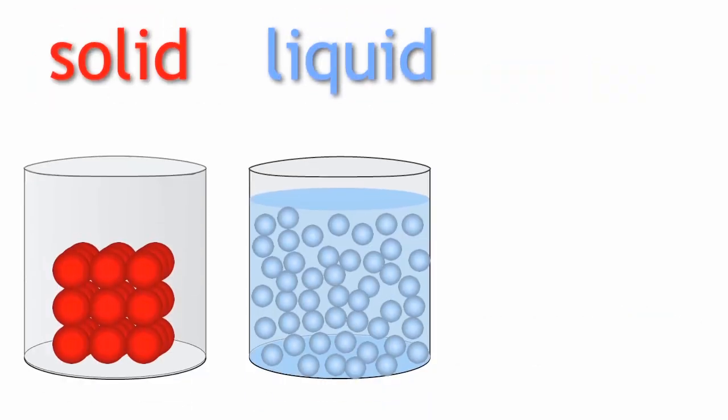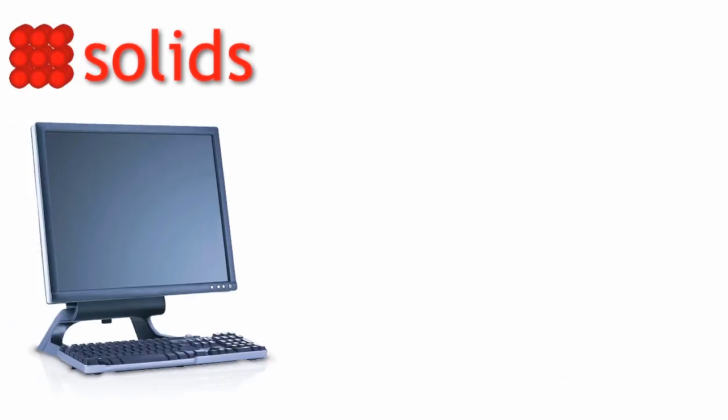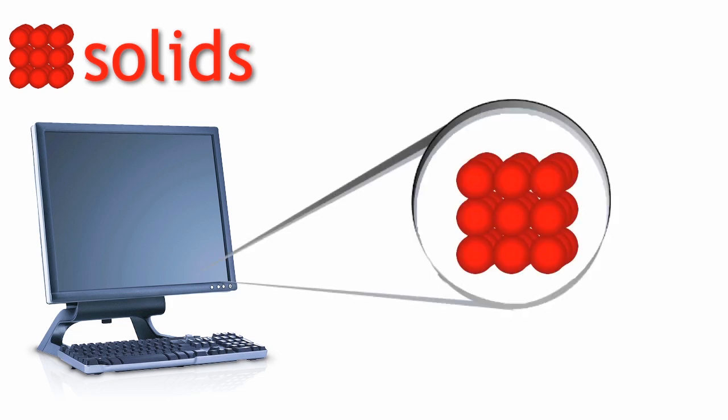The three states of matter are solid, liquid and gas. Let us look at solids. An example of a solid is your computer. The properties of solids depend on how the particles in solids are packed.